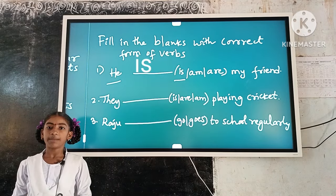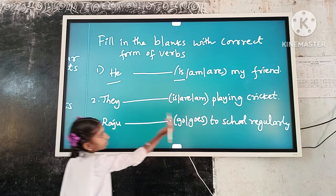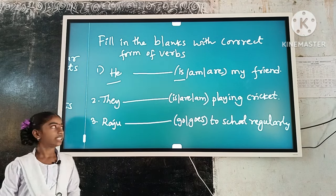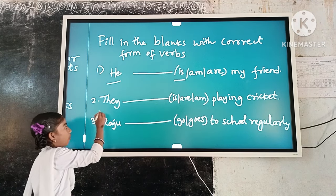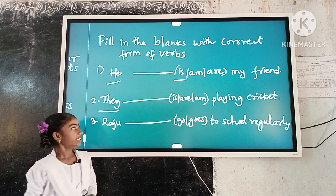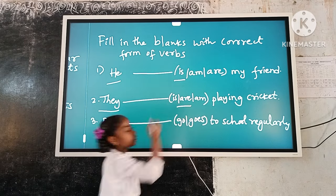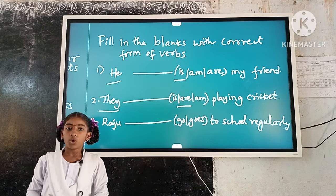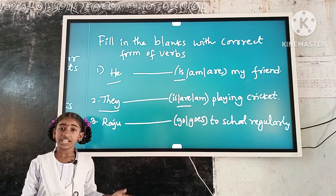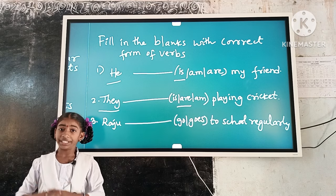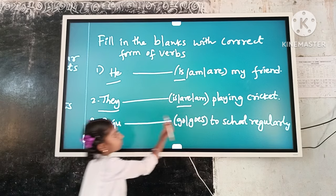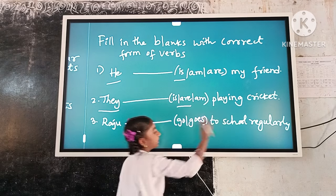Example number 2: They dash playing cricket. Here, 'they' is a plural subject. 'Are' is a plural verb form. So, plural subject and plural verb form agree. The answer is: They are playing cricket.